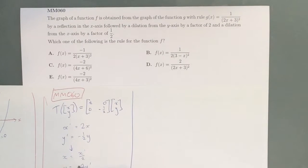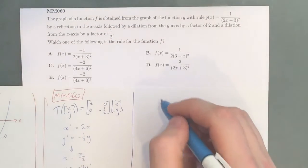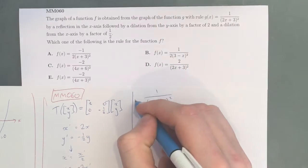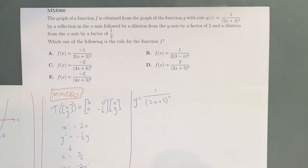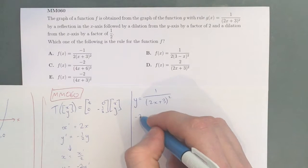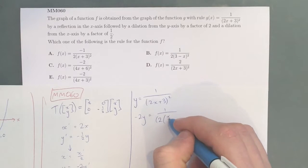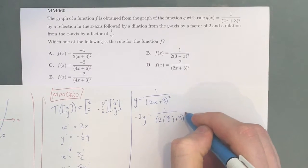From here, all we then need to do is substitute this x and this y into the original equation. So we've got 1/(2x+3)² which is equal to y. And then -2y = 1/(2(x/2)+3)².